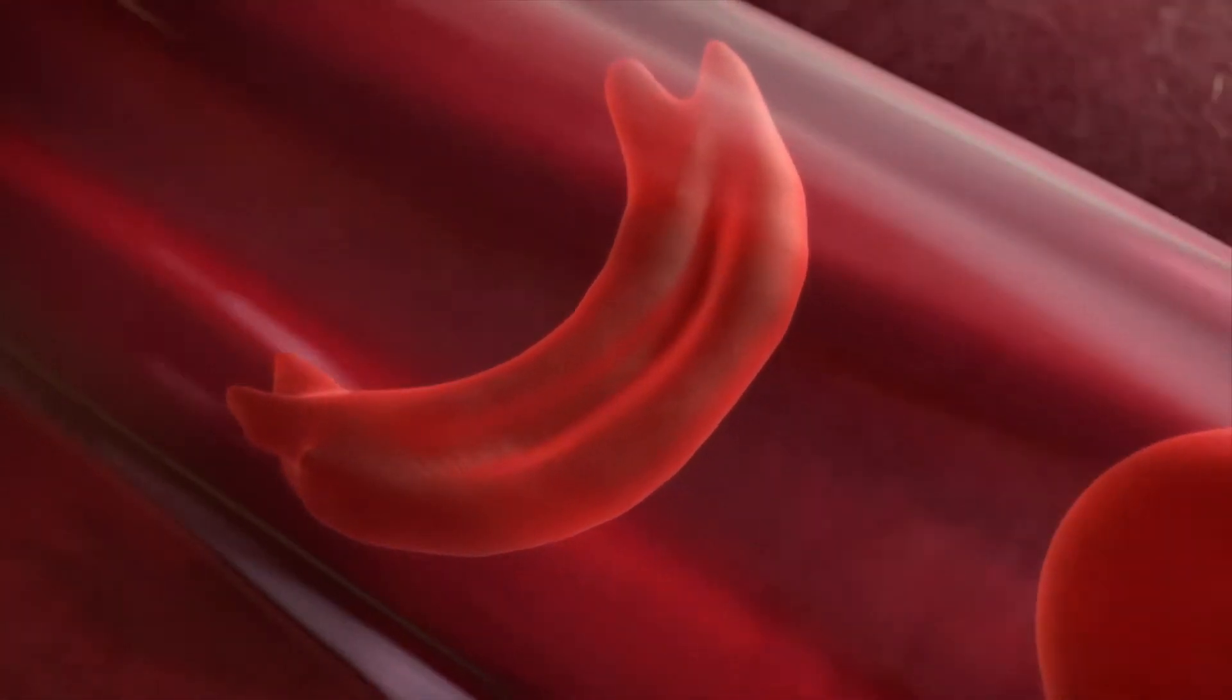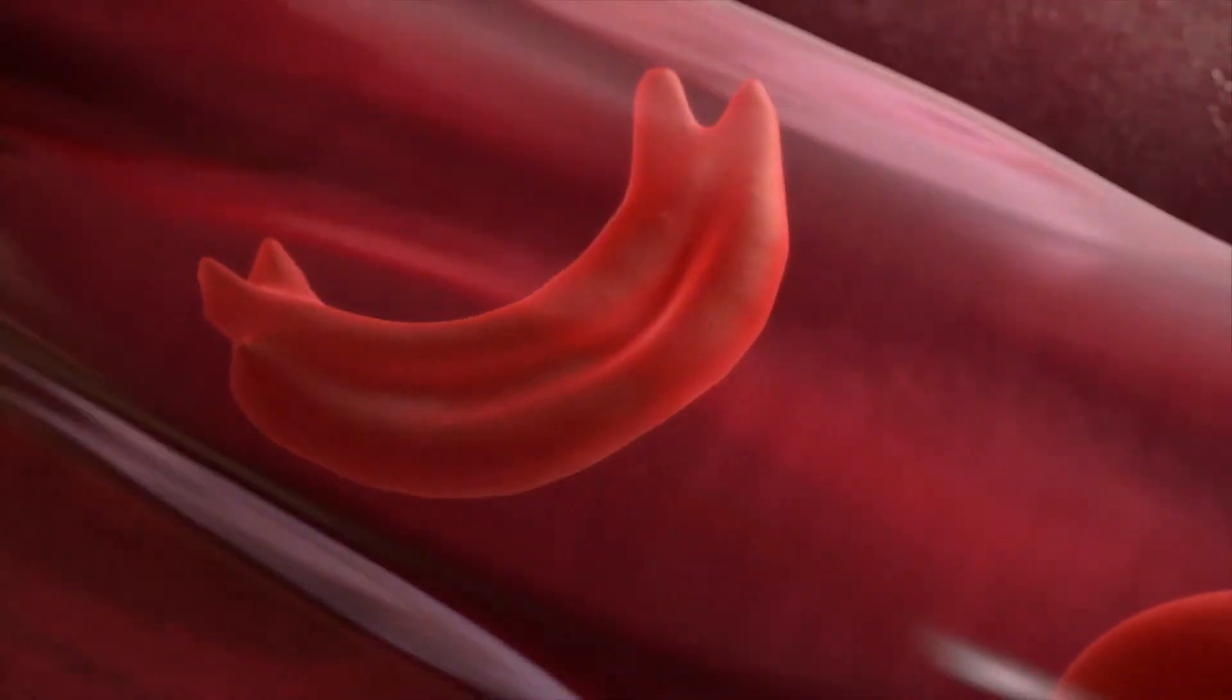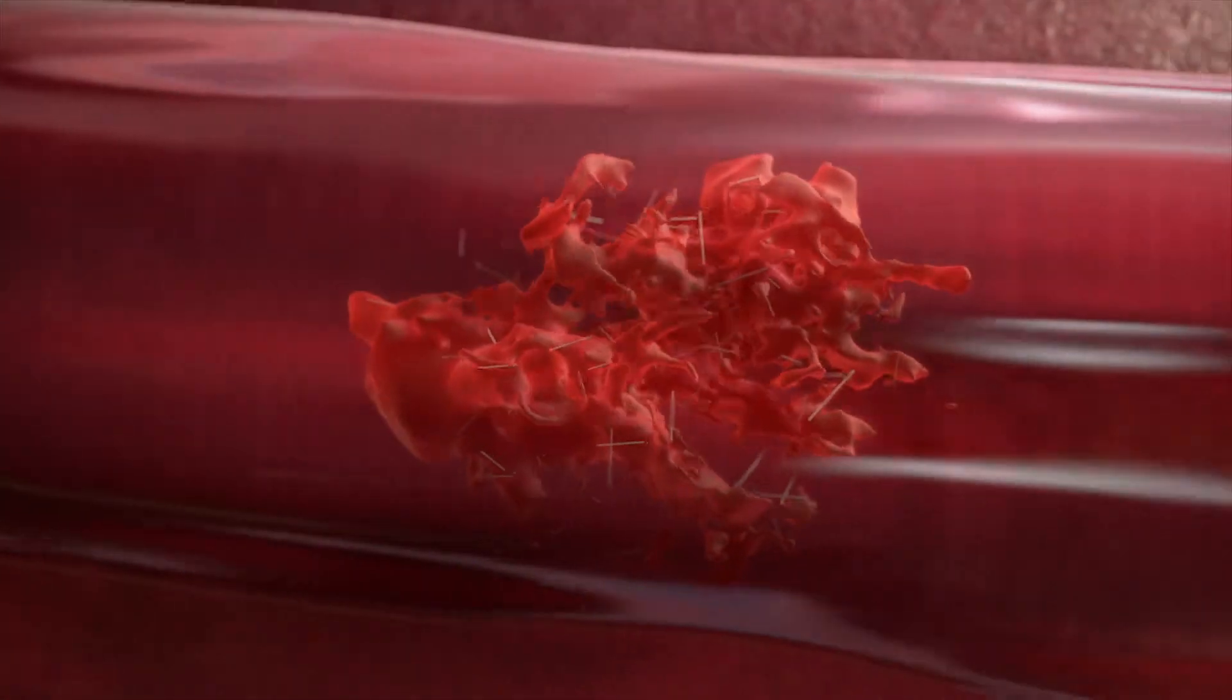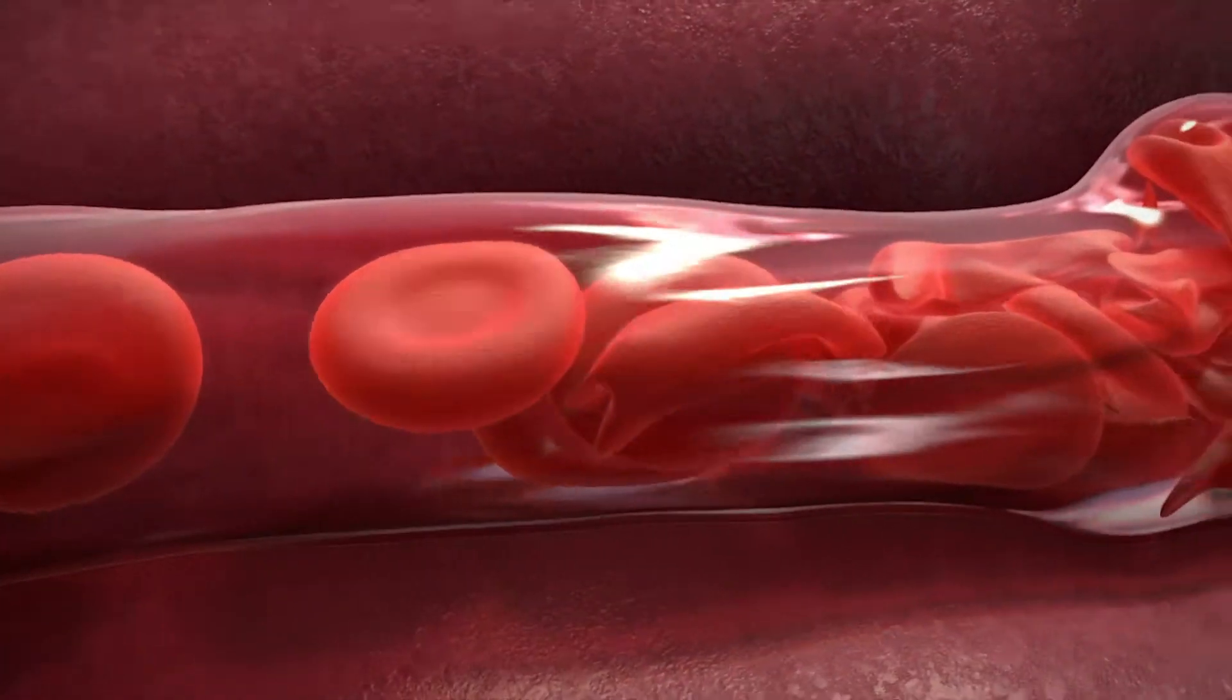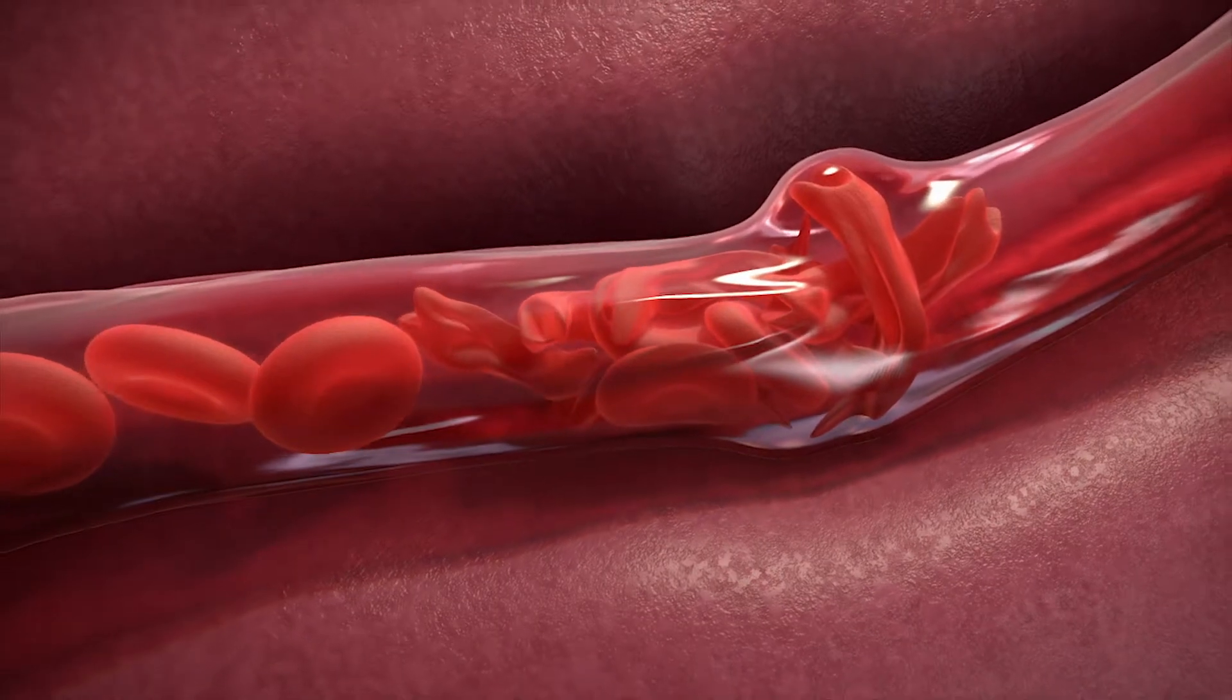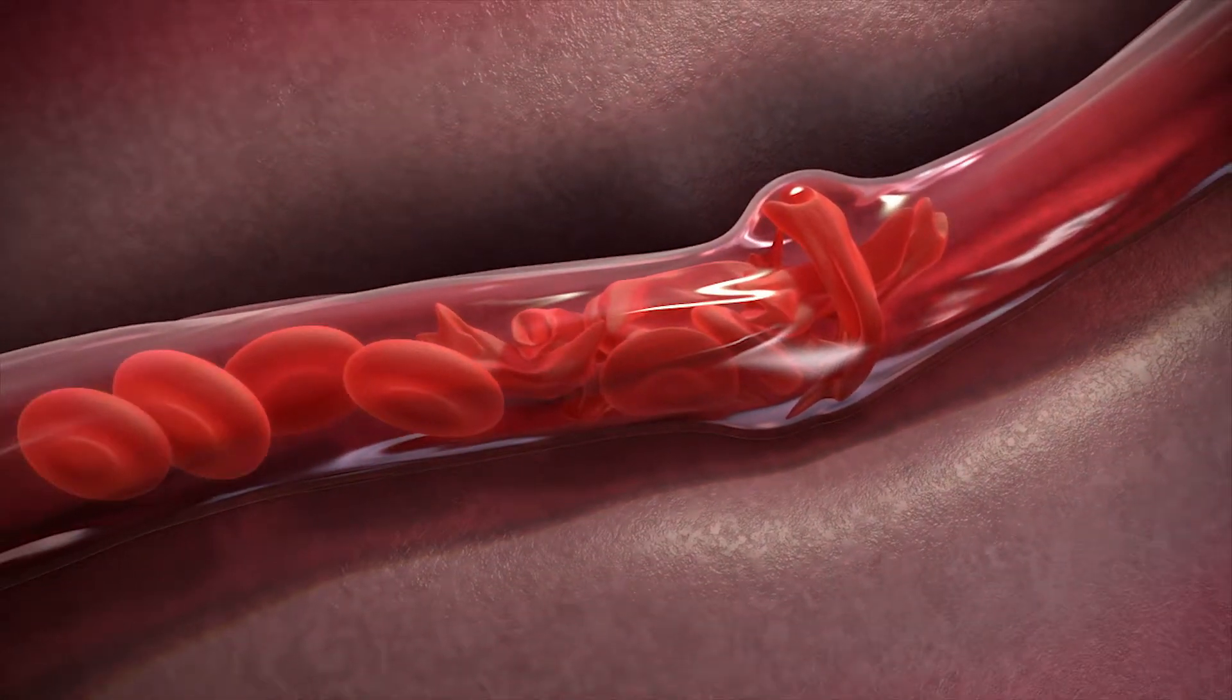This polymerization process creates inflexible, sickled red blood cells that undergo hemolysis, which refers to red blood cell destruction, and cause vaso-occlusion, which means blockage of blood flow. This in turn prevents oxygen from reaching the tissues and organs.